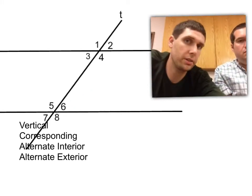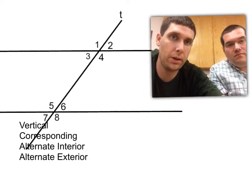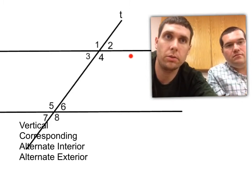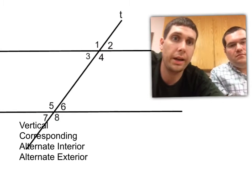Okay, alternate exterior really means almost the same thing, but opposite. Exterior is outside these parallel lines. So the outside ones, which are the ones on the far outside, so angle 1 and 2, and 7 and 8 are our exterior angles.